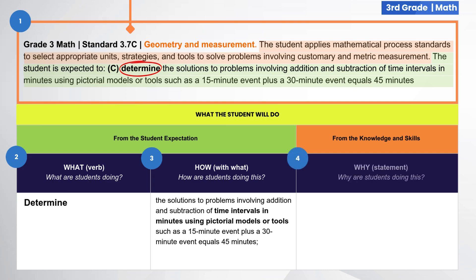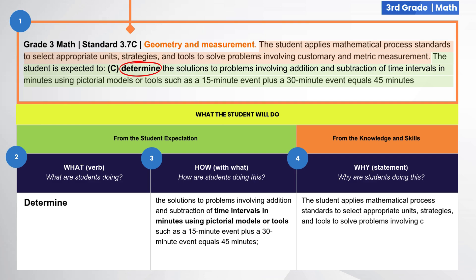Fourth, identify the why. To determine the why, refer back to the knowledge and skill statement and consider: why are students doing this? Why are students engaging in this action with this concept or skill? For this standard, the knowledge and skill statement indicates that students are to determine using the concepts mentioned in the student expectation, in which the student applies mathematical process standards to select appropriate units, strategies, and tools to solve problems involving customary and metric measurement.